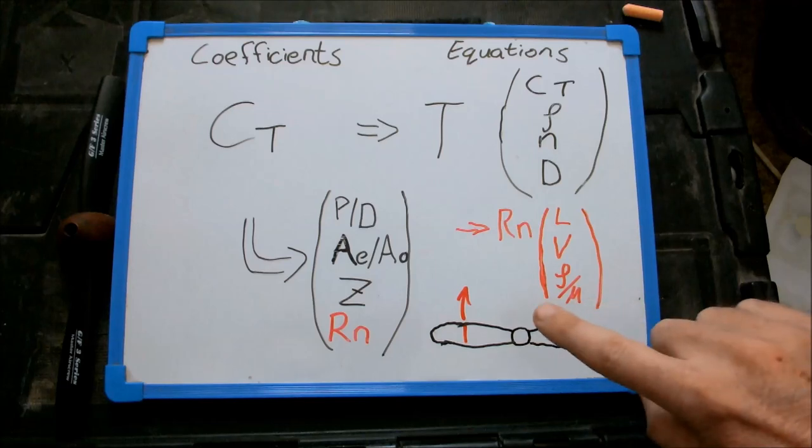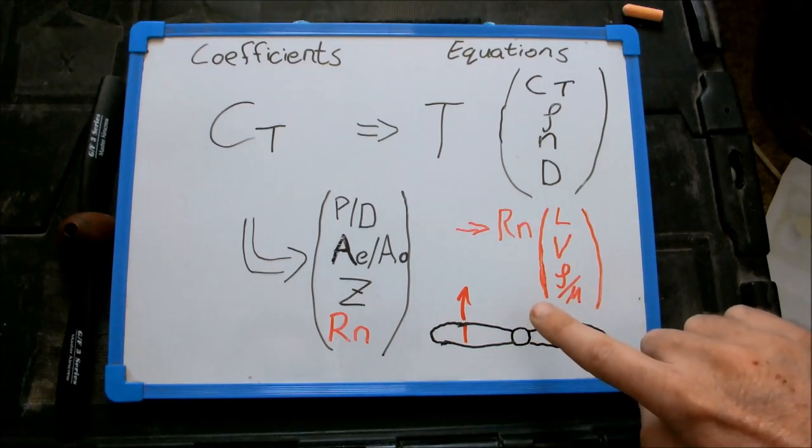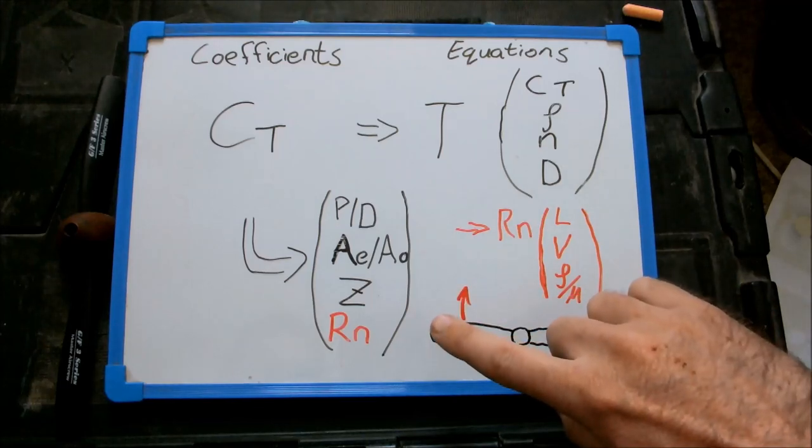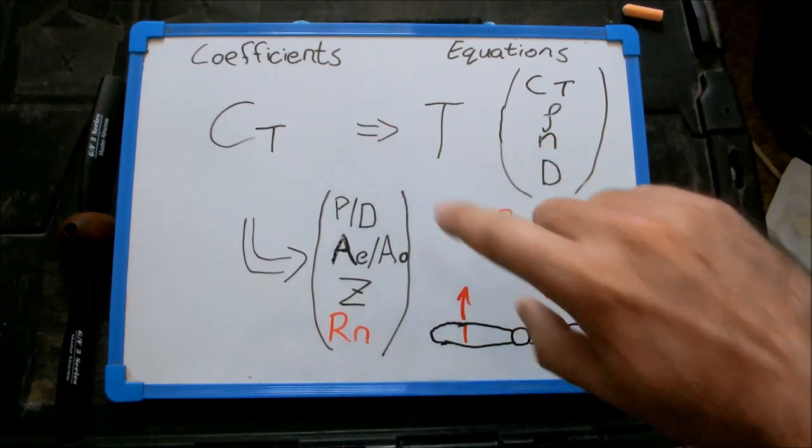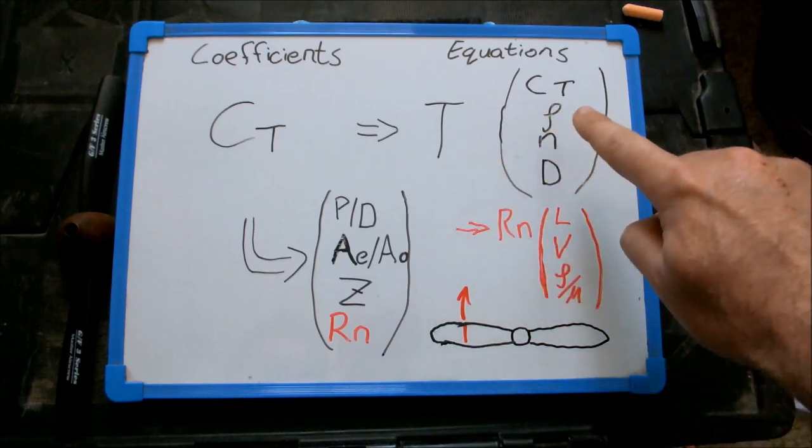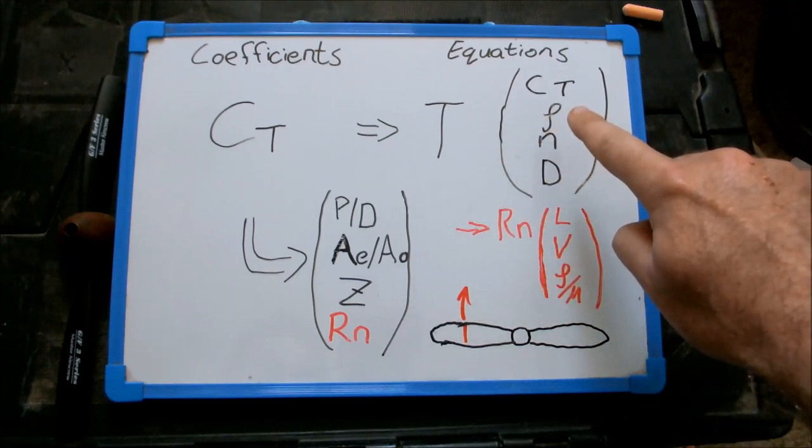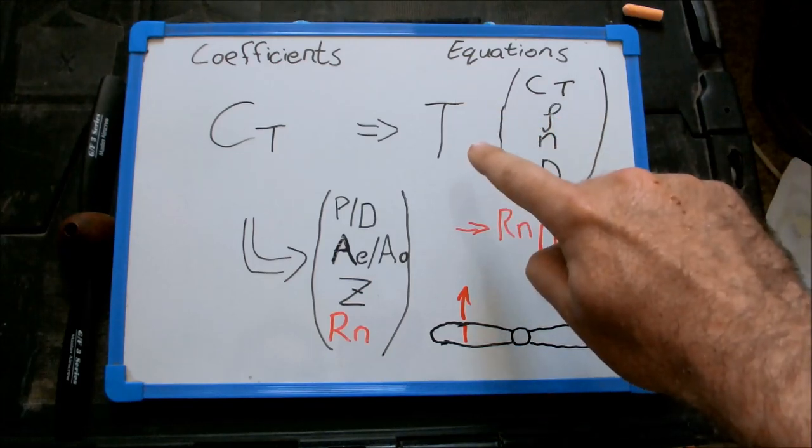So if my propeller was running at 400 RPM, the Reynolds number would be 80,000. That set of coefficients would still apply exactly as is. And simply by swapping that density from air to water, in other words a thousand times more, I will be able to calculate the thrust very accurately.